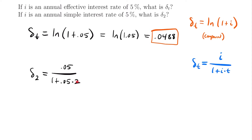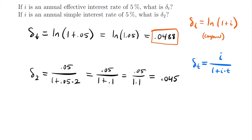Our value of T is 2 and our simple interest rate is 0.05 in decimal form. Simplifying: 0.05 divided by (1 + 0.1) = 0.05 divided by 1.1, which equals 0.0̄4̄5̄ repeating. So we'll stop there — that's the answer. To summarize, the first formula was for compound interest and the second for simple interest, and we can use them to find the force of interest from other rate types.